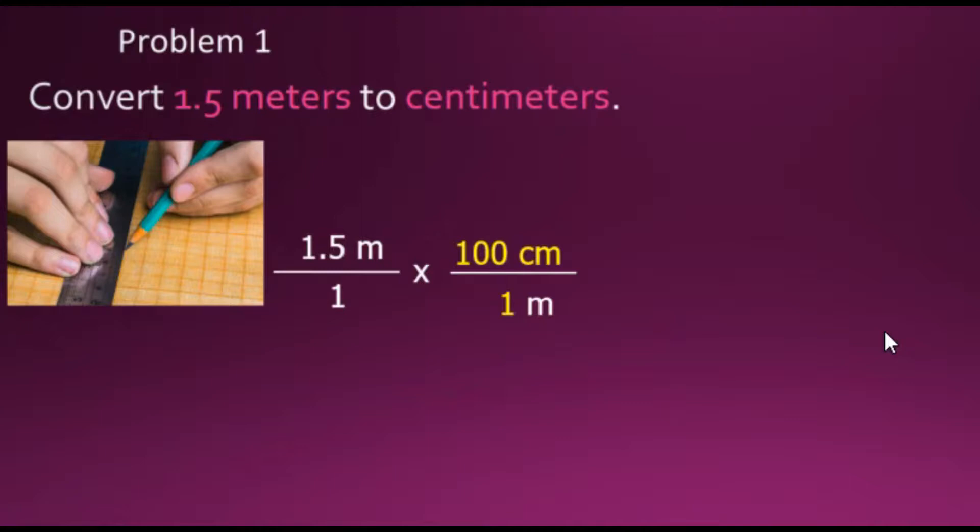When we have the same factor in the numerator and the denominator, we can cancel them out, so we can see our meters are canceling out. Then going ahead with multiplying fractions, which requires multiplying the numerators together and denominators together, then simplifying by dividing by 1, we end up with an equivalent value of 150 centimeters using dimensional analysis.